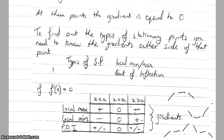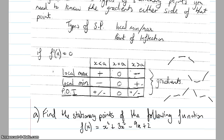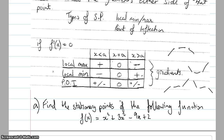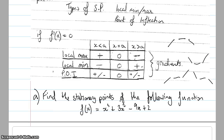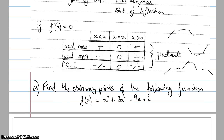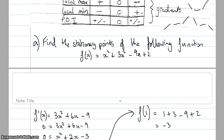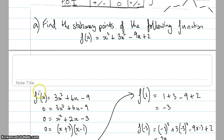Let me go to an example to help illustrate this. I've got f(x) = x³ + 3x² − 9x + 2, and the task is to find the stationary points of this function. To do this, I find the derivative and make it equal to zero. So f'(x) = 3x² + 6x − 9, and I make that equal to zero and solve for x.